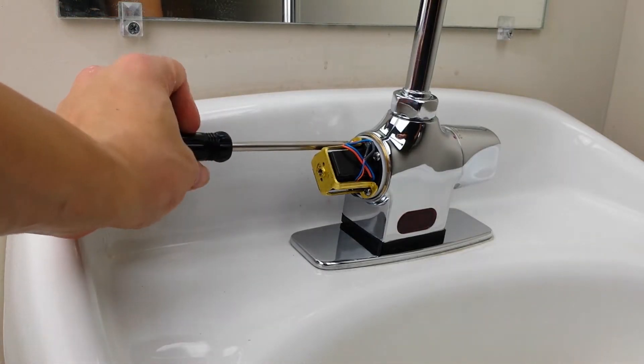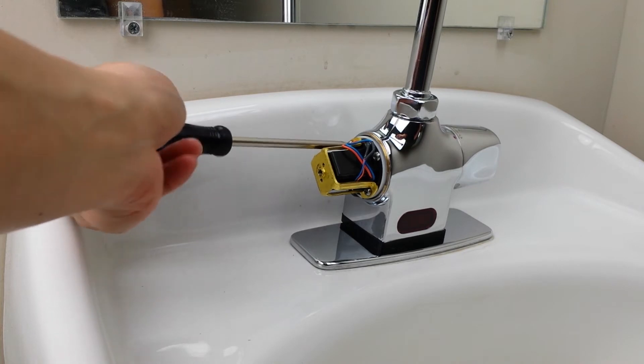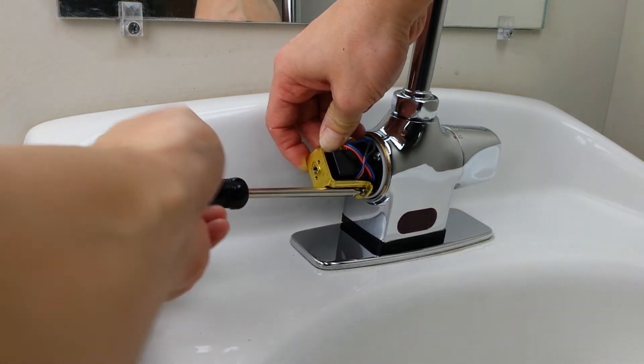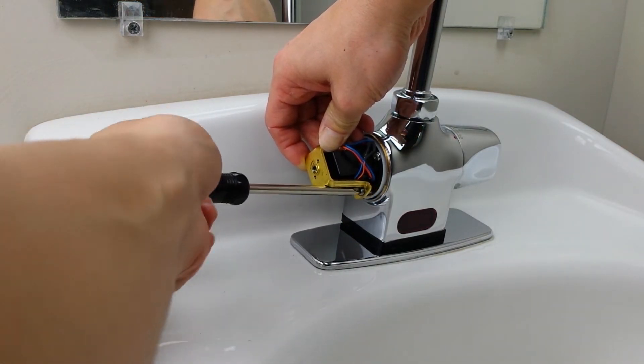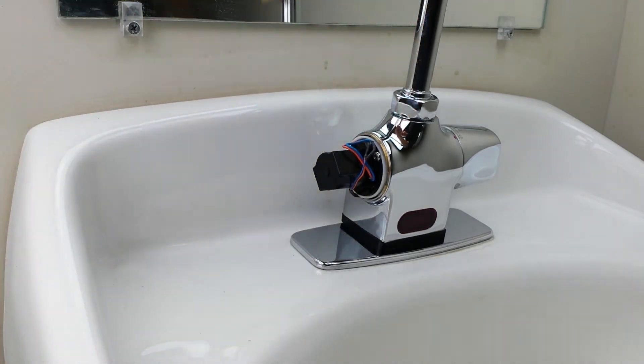Remove the gold color bracket covering the solenoid coil first by removing the two phillips head screws holding it. Place the bracket and the screws holding it aside.